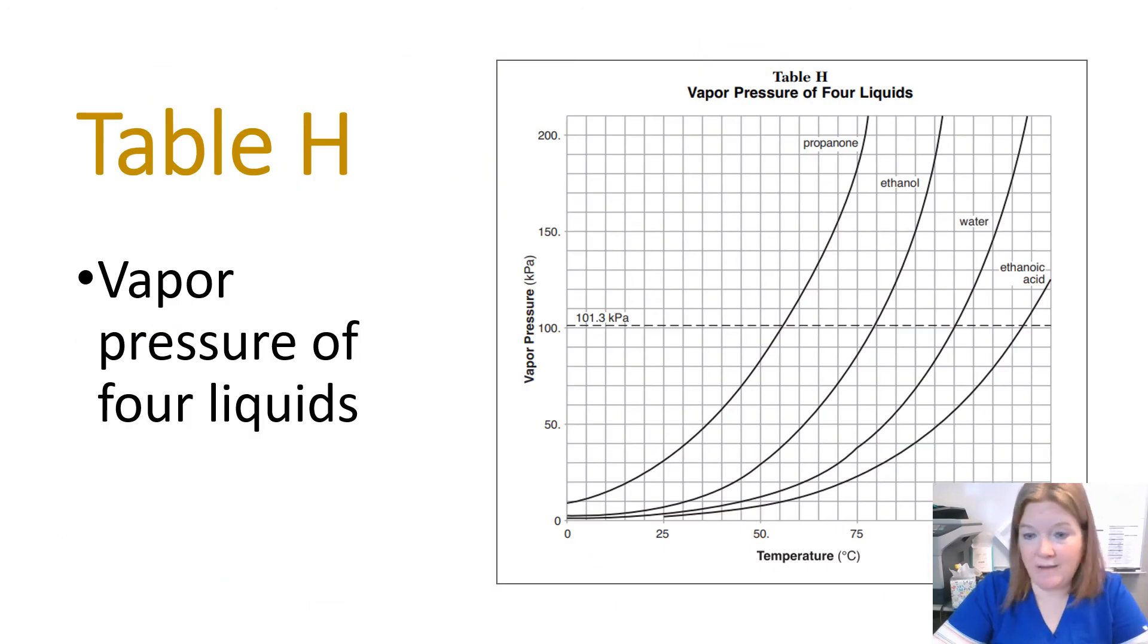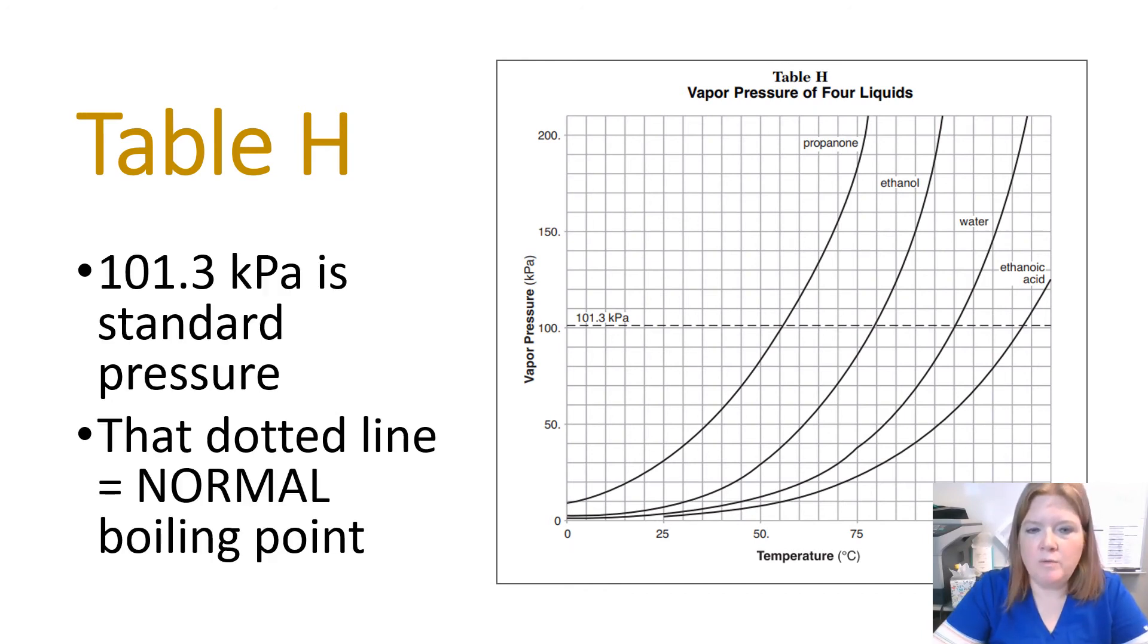So table H you have in your reference table. It lists the vapor pressure of four different specific liquids. 101.3 kPa, the dotted line that's right there, that's standard pressure. That dotted line represents the normal boiling point.